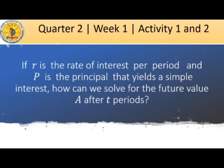Since we have defined those terms, we will now continue with our main topic. If R is the rate of interest per period and P is the principal that yields a simple interest, how can we solve for the future value A after T periods? Instead of creating a table of maturity values, let us look at the following derivation of the formula.